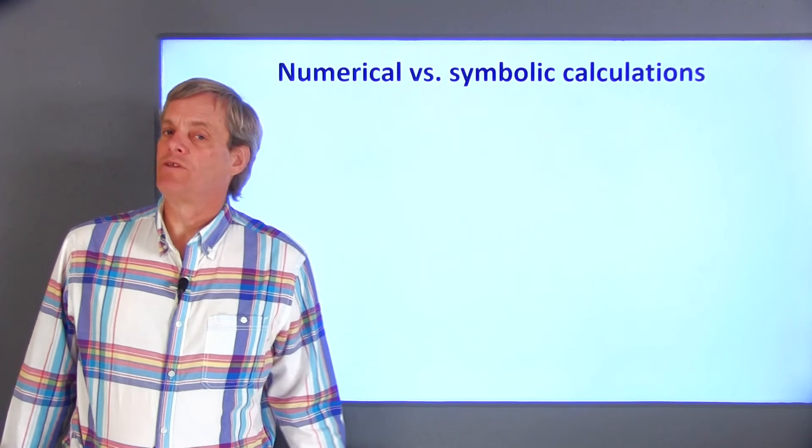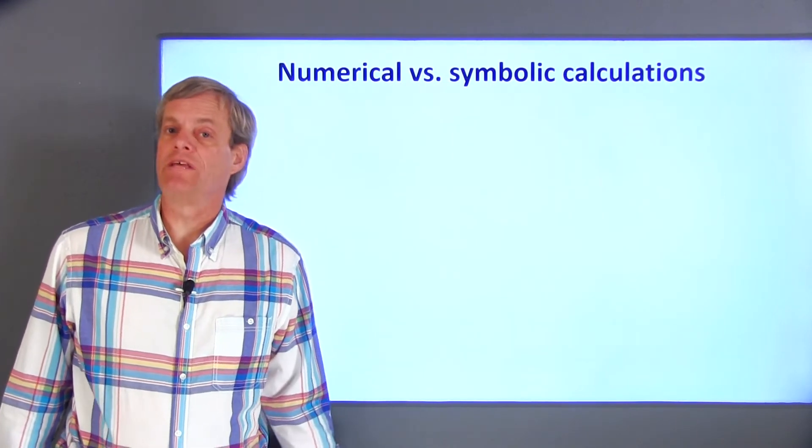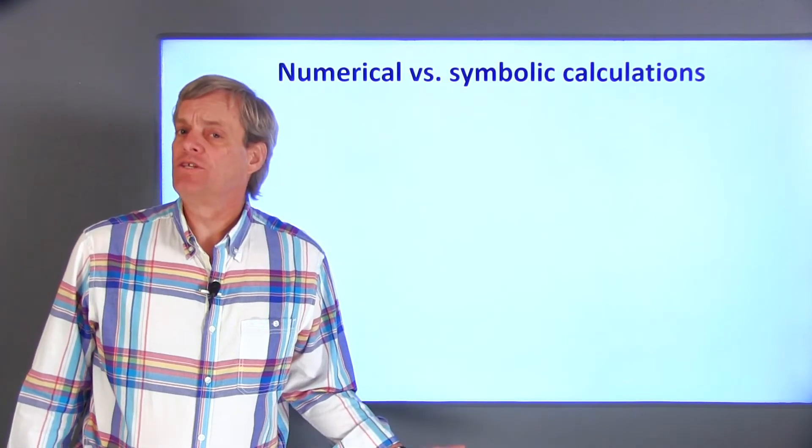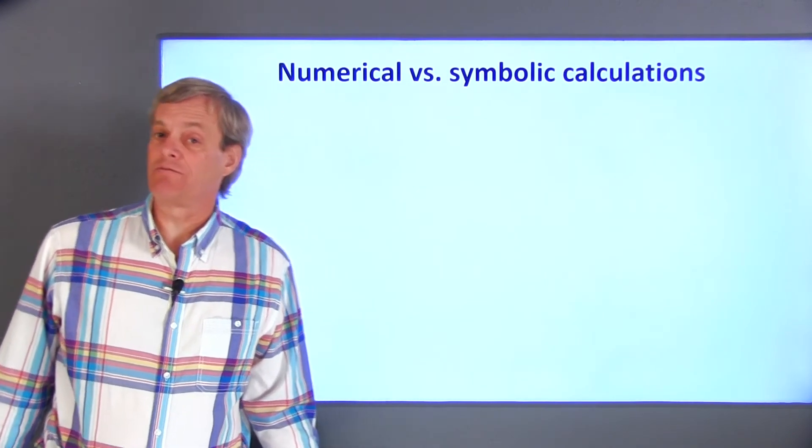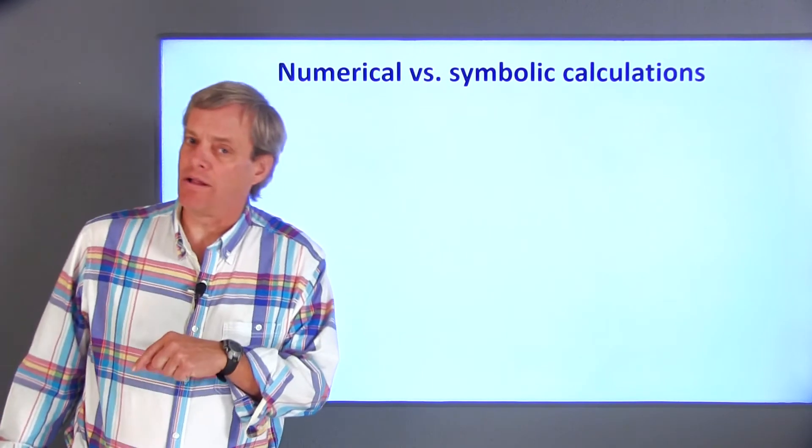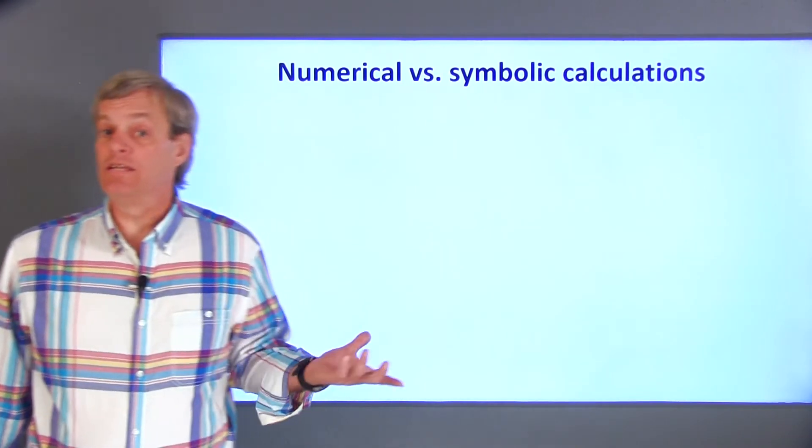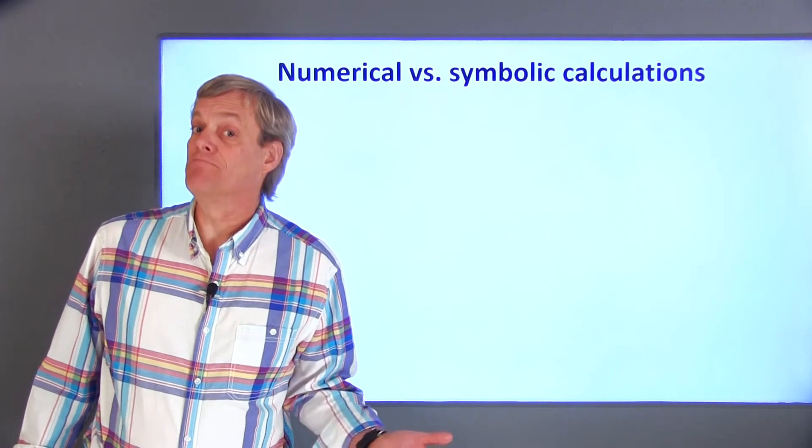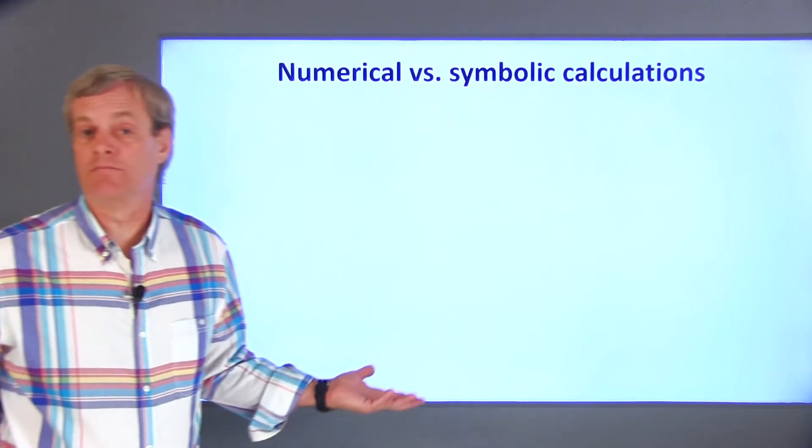One problem with numerical calculations occurs when the errors become larger than whatever error may be deemed acceptable. This usually happens when a long series of calculations that each have a small error are performed. The individual errors can accumulate and become large errors. This is a major difference between numerical and symbolic calculations.